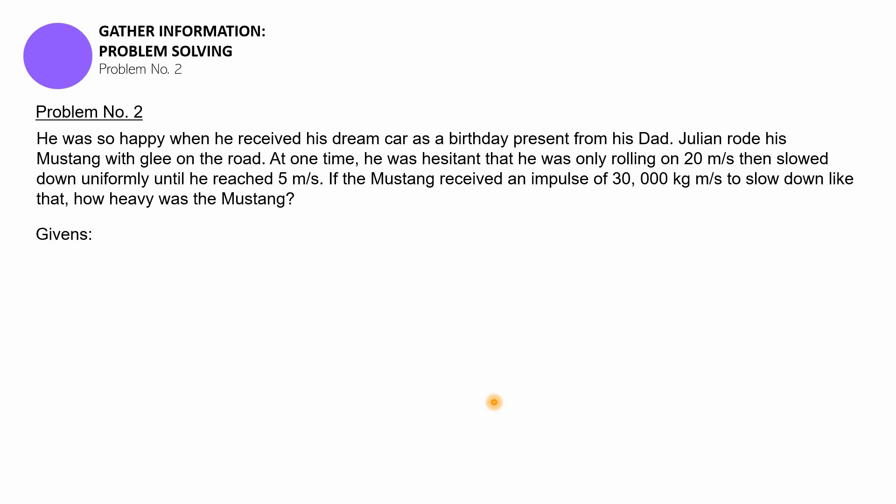Julian rode his Mustang with glee on the road. At one time he was hesitant - he was only rolling at 20 meters per second because the car was expensive, so he hesitated. Then he slowed down uniformly until he reached 5 meters per second. If the Mustang received an impulse of 30,000 kilograms meters per second to slow down like that, how heavy was the Mustang?